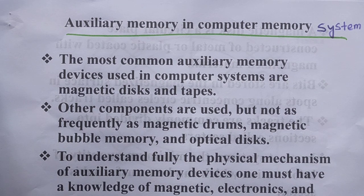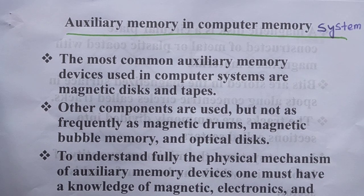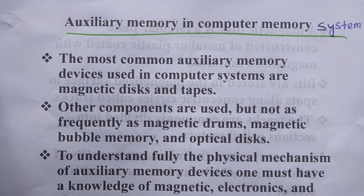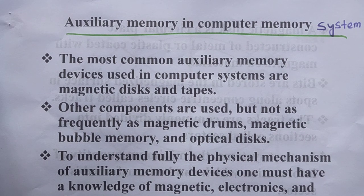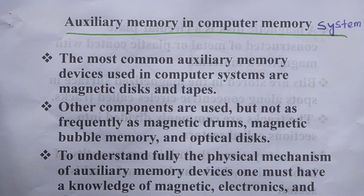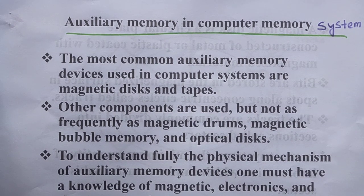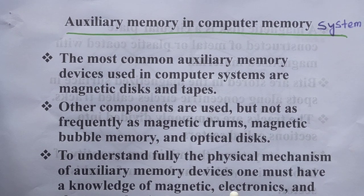Here I will show you how auxiliary memory is used in a computer system. Other components are used but not as frequently as magnetic drums, magnetic bubble memory, and optical disk.